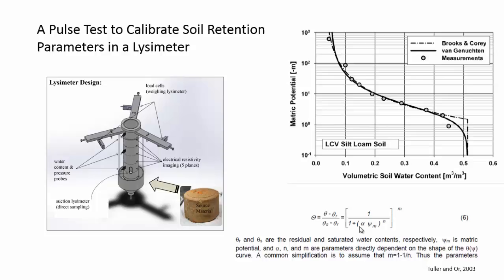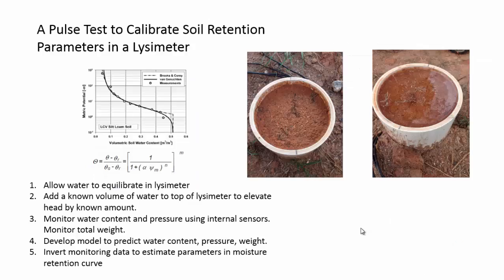So how are we going to go about determining these parameters? One approach is to measure them in the laboratory on small samples. We've tried doing this and we get a variety of different results, and it's not quite clear what we should use. So what I'm suggesting we try is to do a test that's basically going to characterize these parameters using the lysimeter itself. The approach will be to take the lysimeter — there's a little bit of space above the upper part of the soil — and we'll let the soil equilibrate after we pack it.